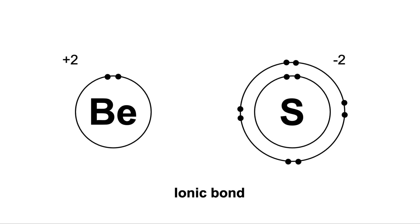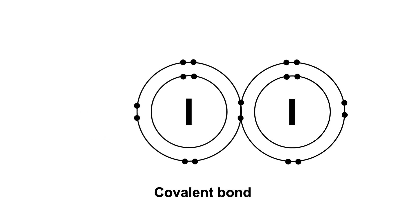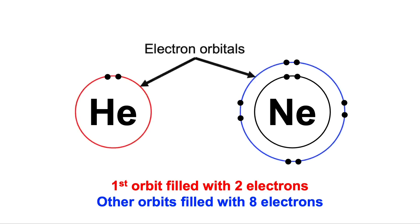Ionic, donated. Covalent, share that. Fill orbit, two or eight of it. Here we're making different bonds with the elements.